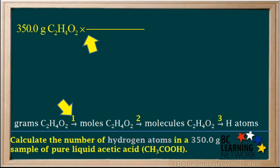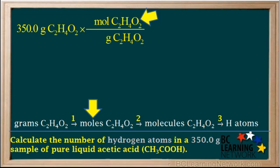We write a conversion factor to change grams of acetic acid to moles. We need to cancel the unit grams of C2H4O2, so we write it on the bottom of the conversion factor. The unit we want is moles of acetic acid, so we write that on top.